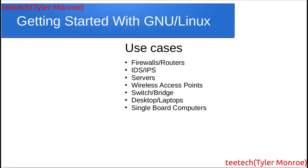Now the fun part: use cases. Firewalls and routers, and IDS/IPS systems — you can install things like Snort and Suricata on a Linux system for intrusion detection and prevention. Any kind of server: web server, email server, DNS, and many others. Wireless access points — many Wi-Fi routers, even the one you're probably using right now, run some form of embedded Linux. A Layer 2 Ethernet switch or bridge, desktops and laptops, and single-board computers like Raspberry Pis and Rock64 machines.